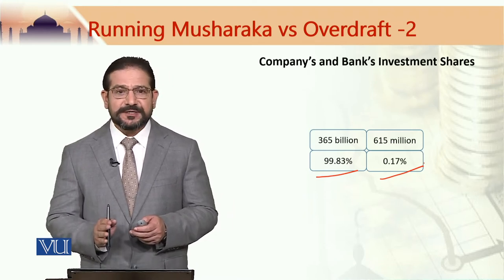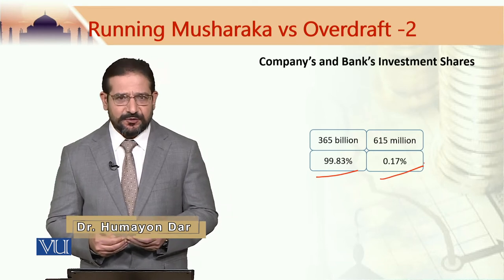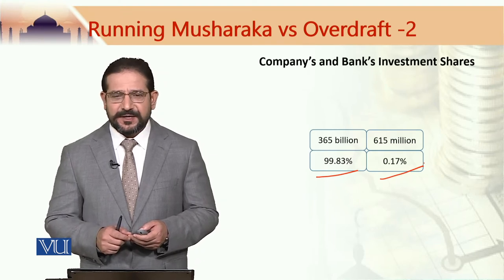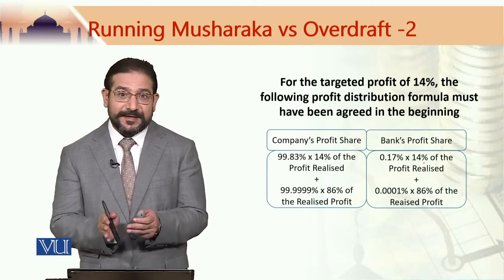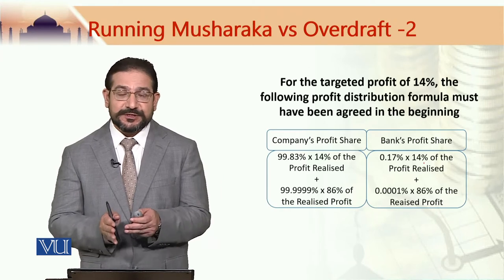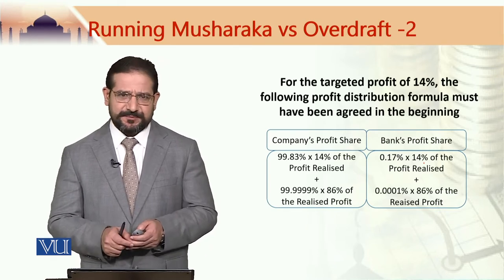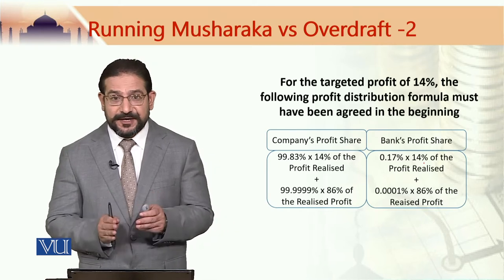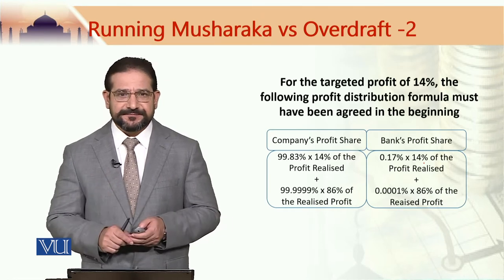This investment share is very crucial for the distribution of profit as well as if there is any loss, because the profit distribution ratio in this case is a bit complicated. It is not just a number, it is actually a formula. The question arises: can we use a complicated formula like this when it comes to determining profit distribution ratio in Musharraka? The answer is yes, as long as a formula generates a fixed number at any point in time, this is acceptable.